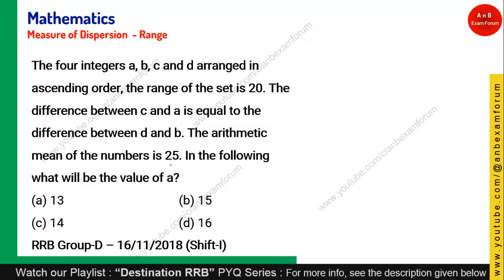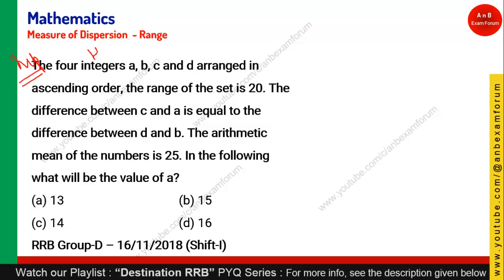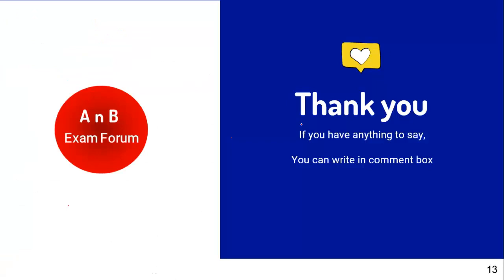Coming to the next question: four integers are arranged in ascending order. The range is 20, the difference between C and A equals the difference between D and B, and the arithmetic mean is 25. Find the value of A. This question is given as homework — write your answer and how you solved it in the comment box. Thank you for watching. In the next video we are going to cover standard deviation and variance. If you have not subscribed to our channel, please subscribe. Have a nice day.